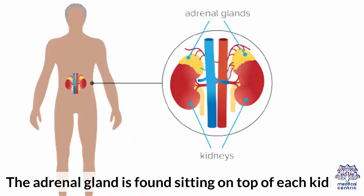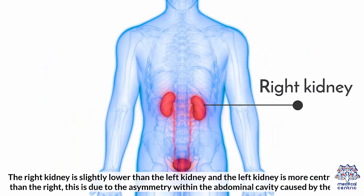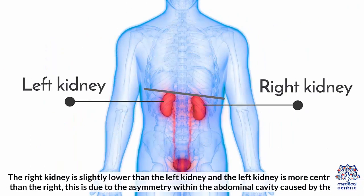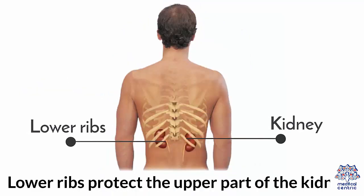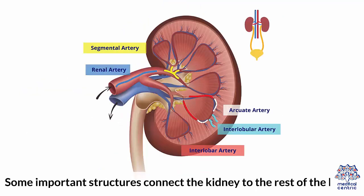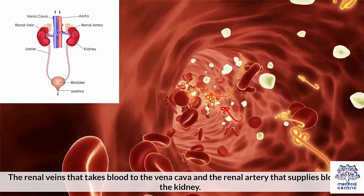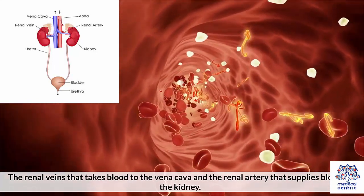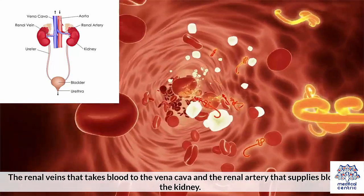The adrenal gland is found sitting on top of each kidney. The right kidney is slightly lower than the left kidney, and the left kidney is more centralized. This is due to the asymmetry within the abdominal cavity caused by the liver. Lower ribs protect the upper part of the kidney. Some important structures connect the kidney to the rest of the body, including the renal veins that take blood to the vena cava and the renal artery that supplies blood to the kidney.